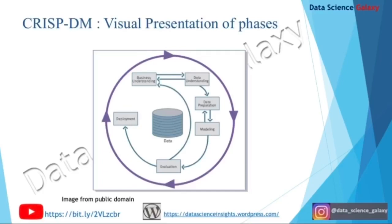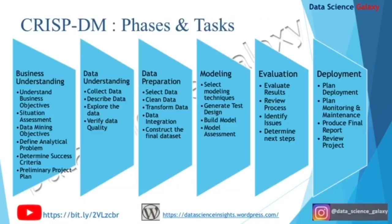This graphic depicts the various phases involved in the CRISP-DM model. The phases are: business understanding, data understanding, data preparation, modeling, evaluation, and deployment. Let us spend time to understand every phase in greater detail — it's very important to understand each phase.